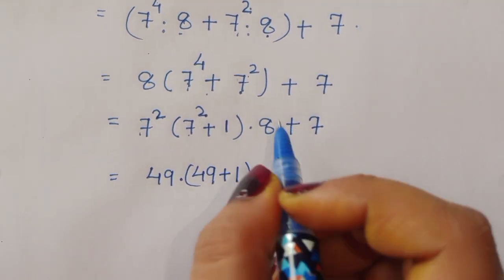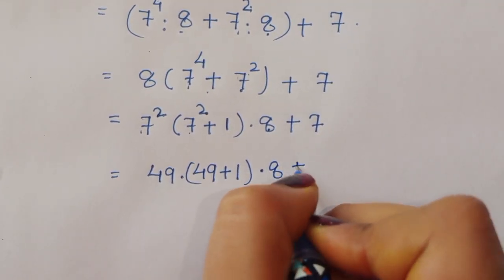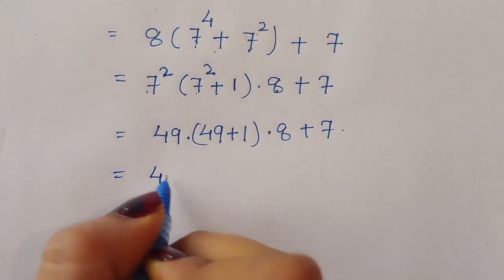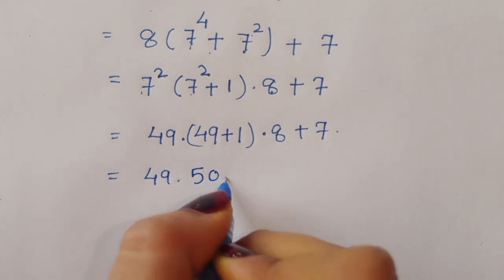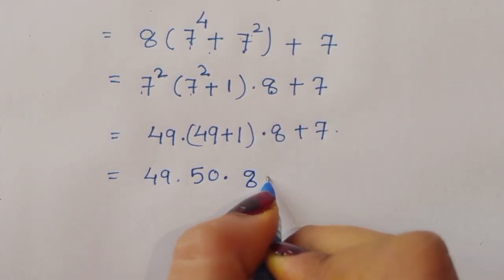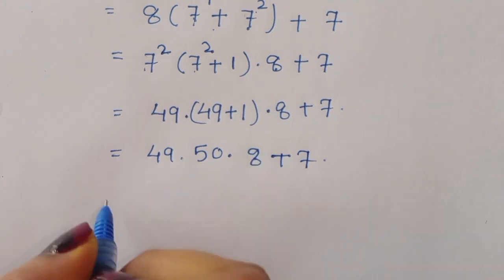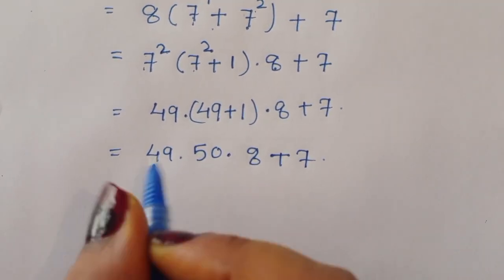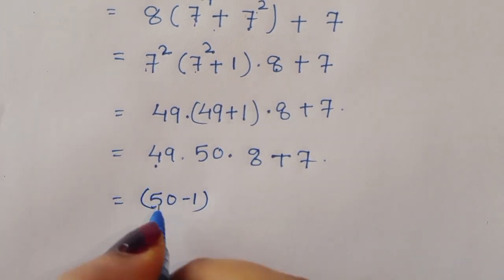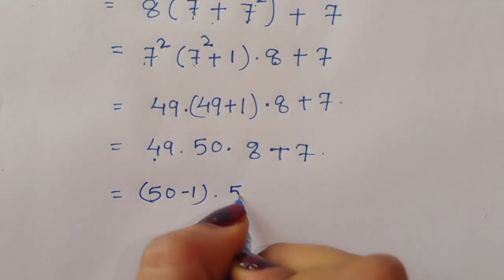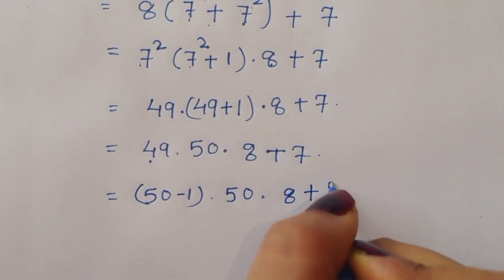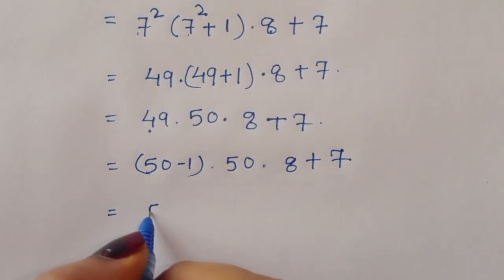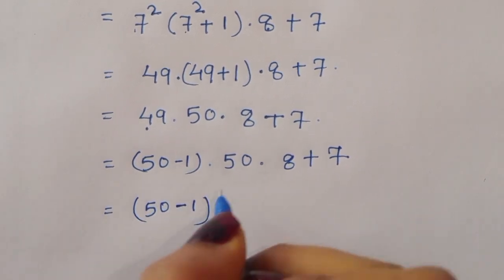Now we have 49 times 50 times 8 plus 7. We can write 49 as 50 minus 1. So this becomes 50 minus 1 times 50 times 8 plus 7.